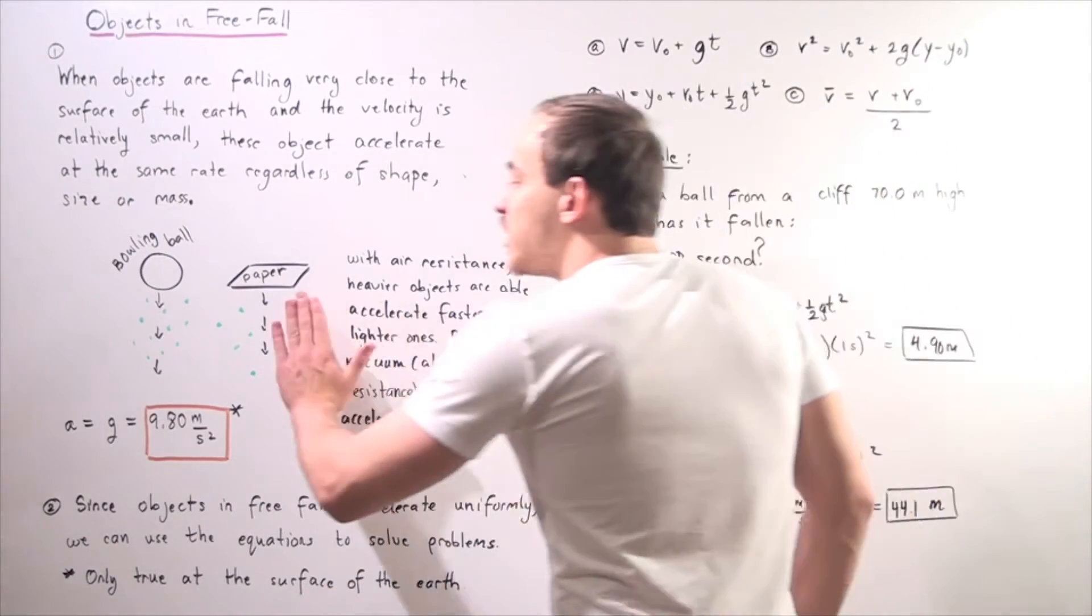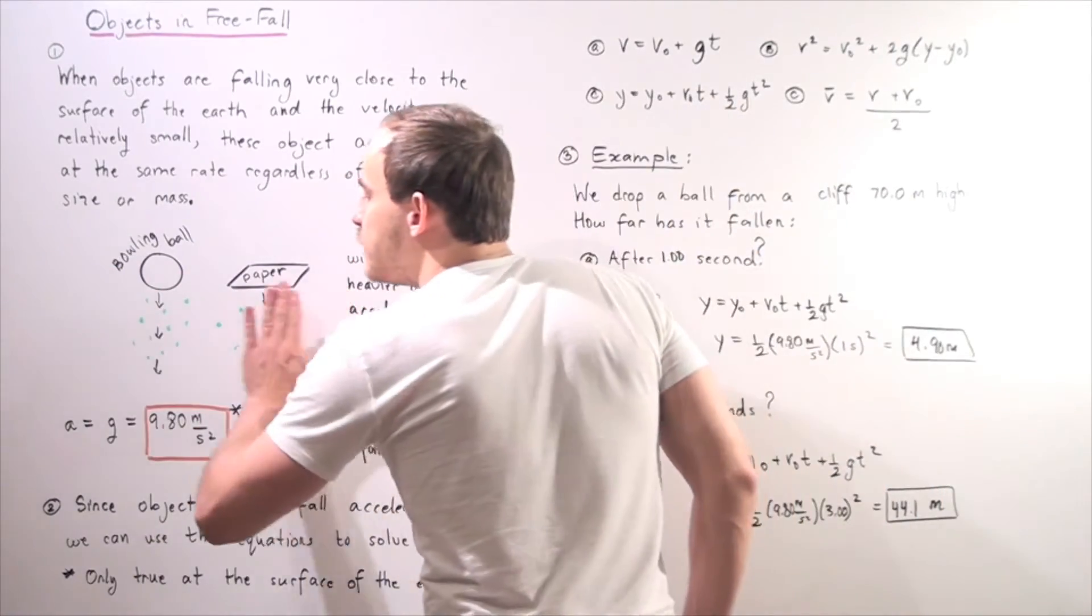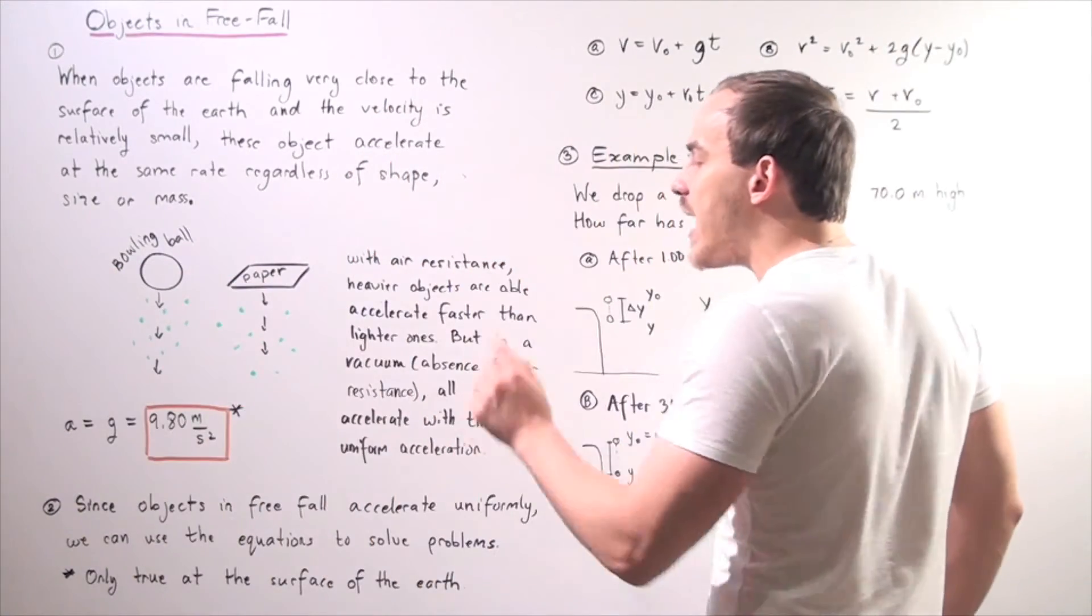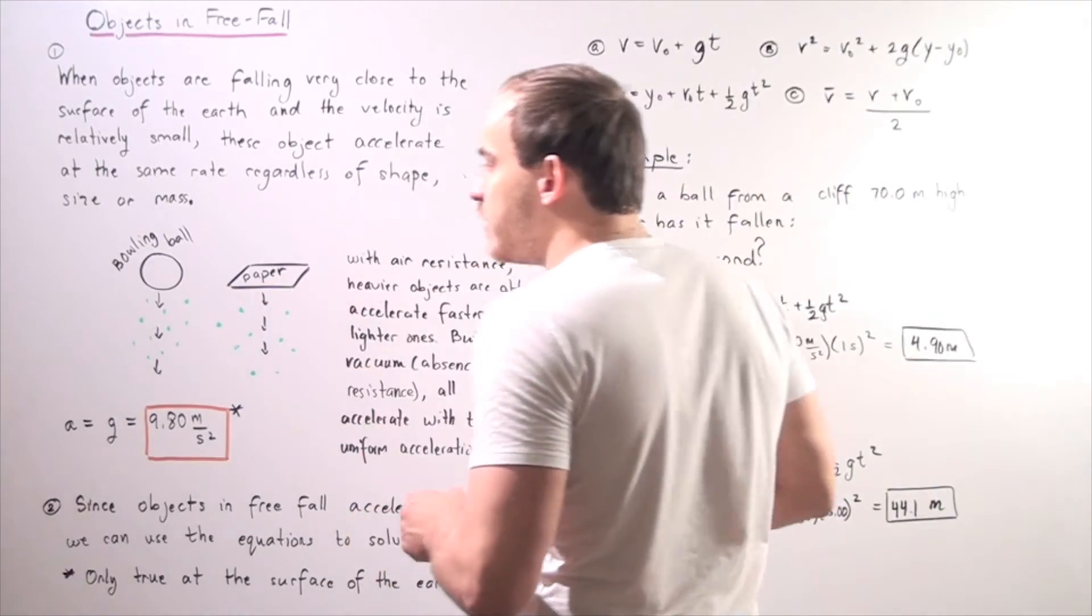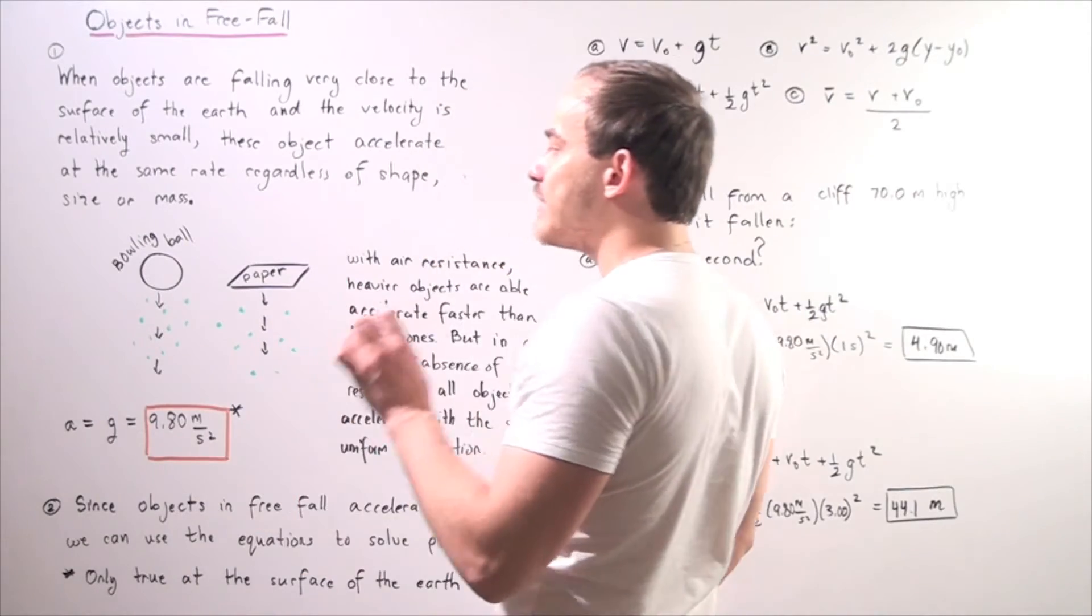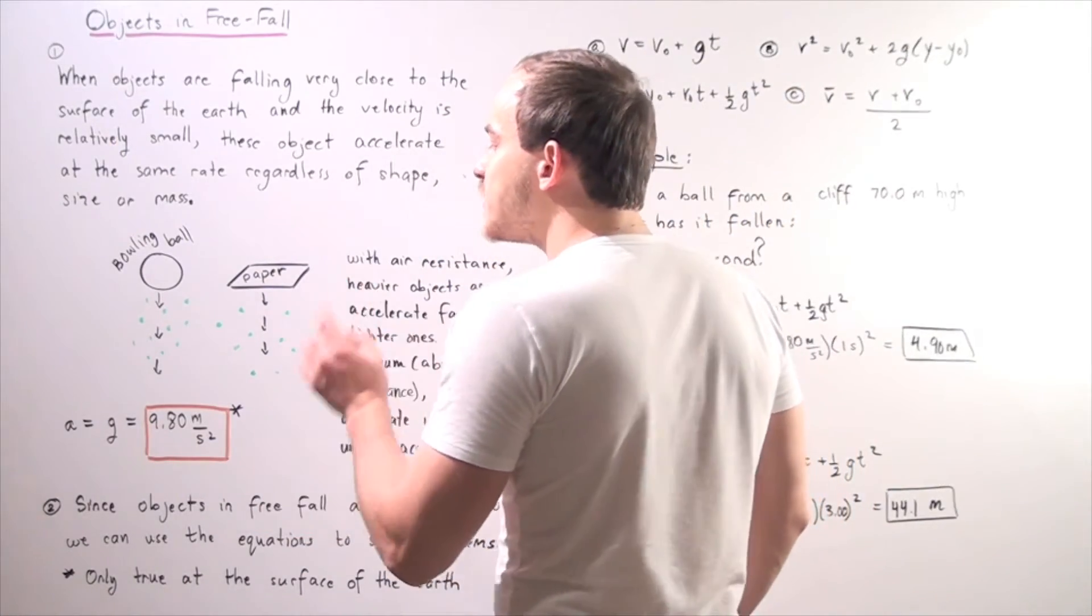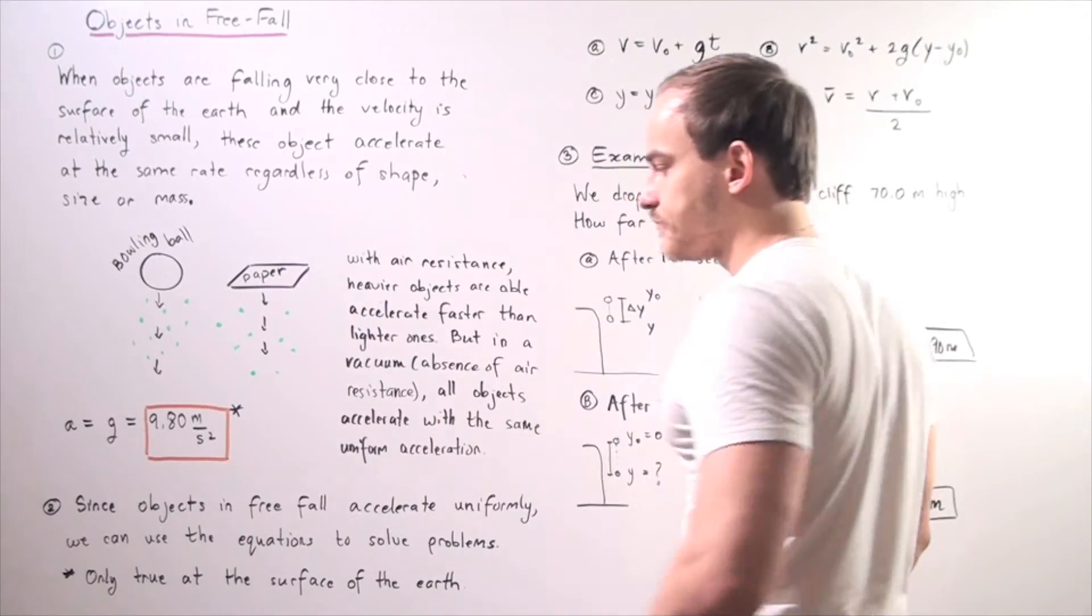So once again, if we completely remove all the molecules, if we create a vacuum, there will be no air resistance and so this flat sheet of paper and the bowling ball will reach the ground at the same exact time because they will accelerate with the same acceleration.